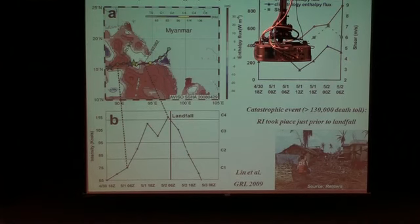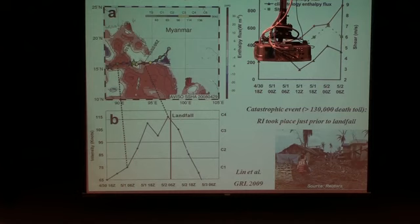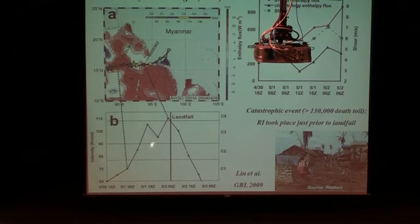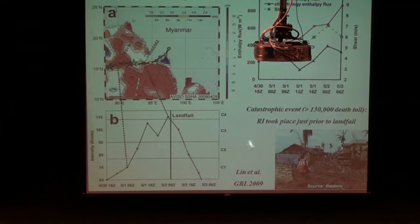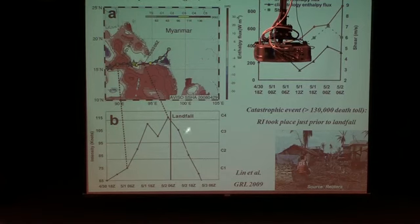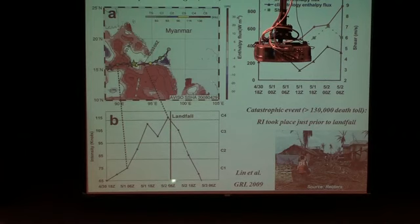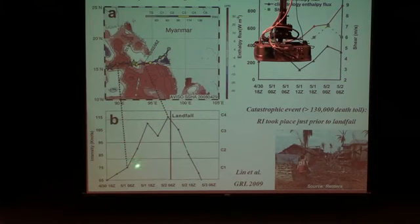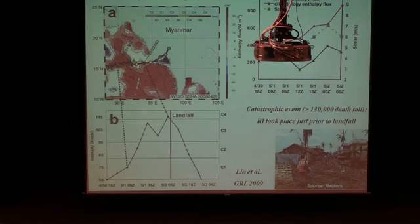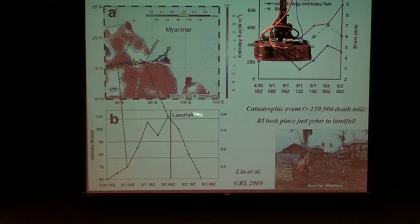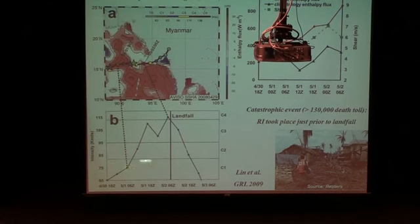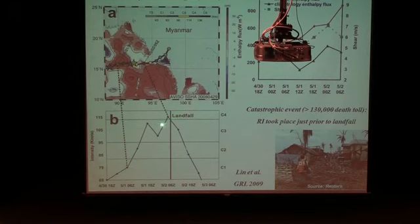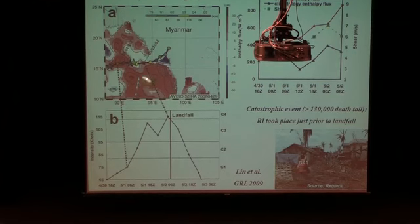This is the case of Killer Cyclone Nargis, 2008. This was the most damaging cyclone almost in the recent two decades. There were more than 130,000 deaths in Myanmar, and this was a very catastrophic event. Why? It was a rapid intensification event just before landfall. It made landfall on 2nd of May as category 4, but before then, it went through a very rapid intensification period from category 1 to 4 within one day, within 24 hours. This was very difficult for forecast and left with very little warning time. So this was very catastrophic.